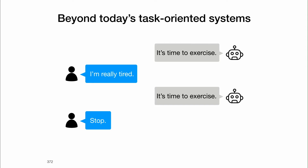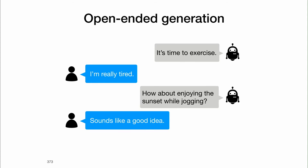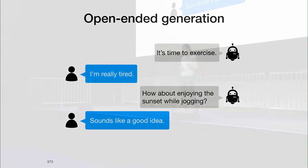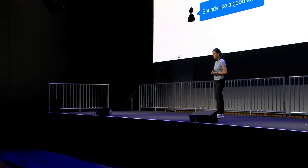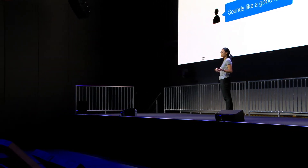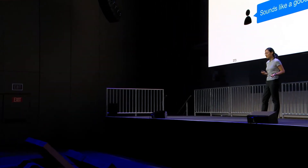Here is another example. The bot wants to remind the user to do some exercise. If the user says 'I'm really tired today,' the bot can only keep reminding the user to exercise until it is stopped, because that's the only thing relevant to the goal. But if you want to get the user to move, it's actually more effective to include some chit-chat — for example, the bot can say 'How about enjoying the sunset while jogging?' So in both cases, we want systems that can handle both grounding and open-ended generation. That's going to be the topic of the talk today.